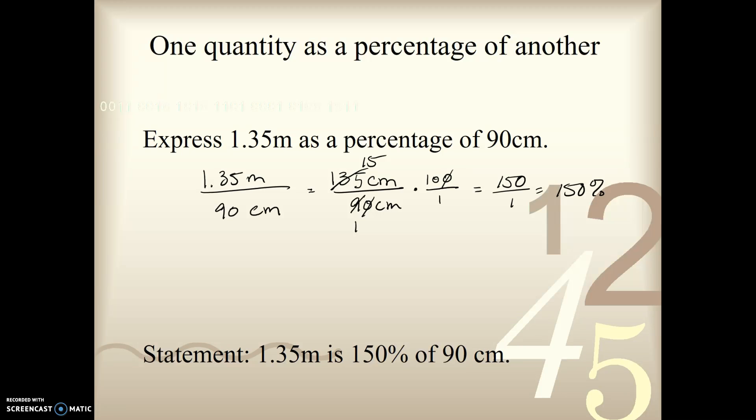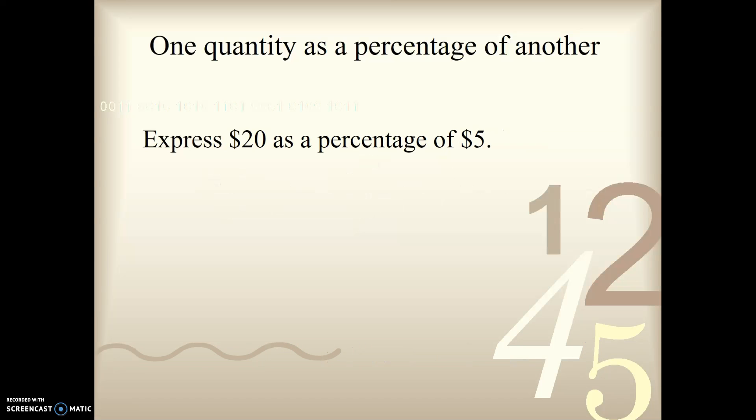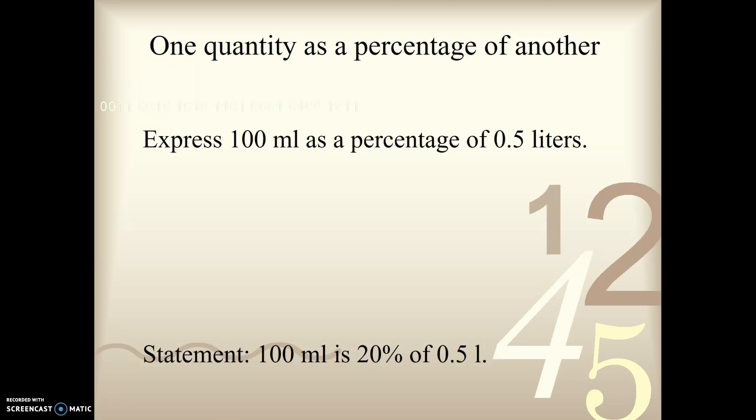Go ahead and do the last four on your own, and then come back and check your work. $20 as a percentage of $5. You should have said $20 is 400% of $5. Number seven, $18 as a percentage of $6. You should have said $18 is 300% of $6. Next one, 100 milliliters as a percentage of 0.5 liters. You should have said that 100 milliliters is 20% of 0.5 liters. And the last one, 2.4 kilometers as a percentage of 800 meters. Hopefully you said that 2.4 kilometers is 300% of 800 meters.